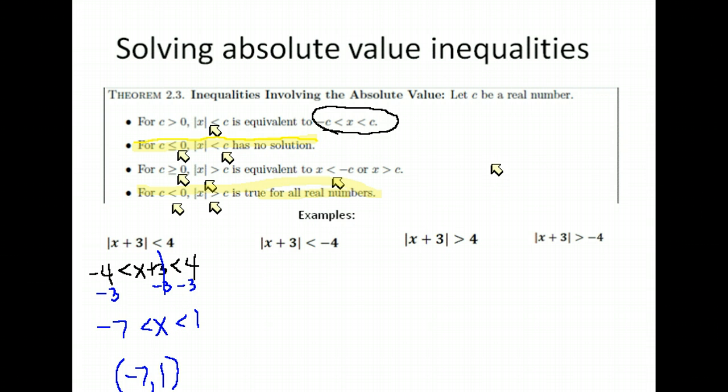Let's look at our next example. It says the absolute value is less than a negative. Now remember, absolute values are always positive numbers. So this one, when is it going to be less than a negative? Never. So this one is no solution.